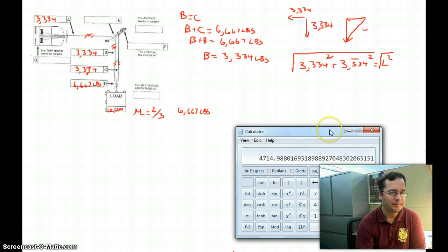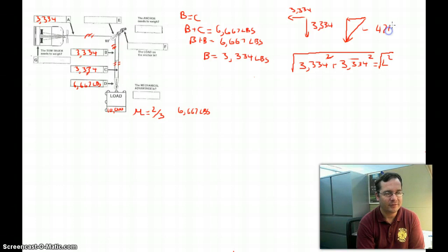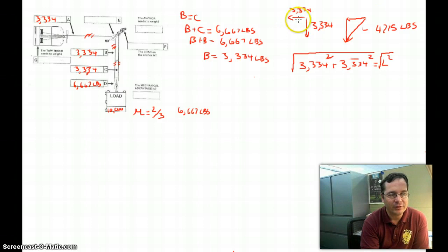Now let's think about if that's reasonable. Would it make sense if we're pulling to the left with 3,334 pounds and down with 3,334 pounds that we would get a downward and leftward force of 4,715 pounds? Well, it probably does. We know that if both of these were pulling straight left, it would be the exact sum of these two, 3,334 times 2. So it would be 6,667. On the other hand, if they were pulling exactly opposite of each other, they would cancel out and it would be zero. So the answer has to be somewhere between zero and 6,667.